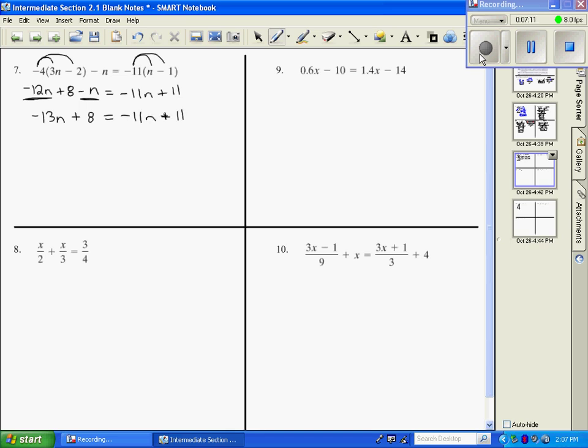Now that everything is simplified, I want to move all the variables to one side and all the numbers to the other. So I'm going to add 11n to both sides. So I get negative 2n plus 8 equals 11. And I'll move the numbers to the other side. So I have negative 2n equals 3. Divide both sides by negative 2. And n equals negative 3 halves.